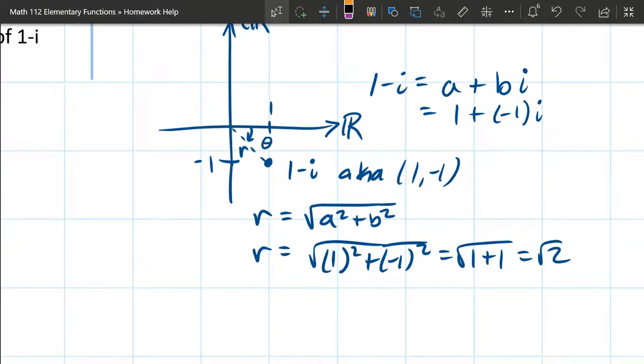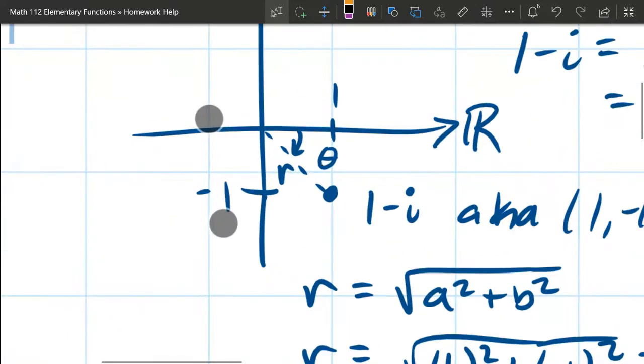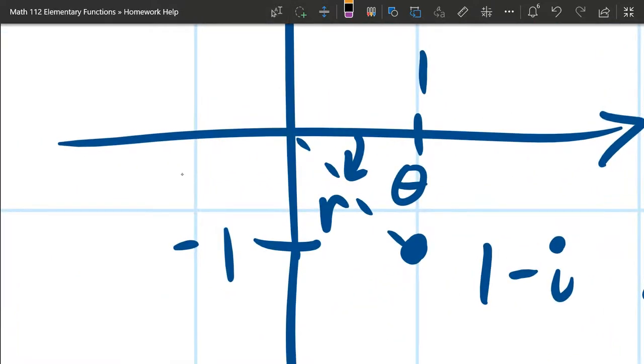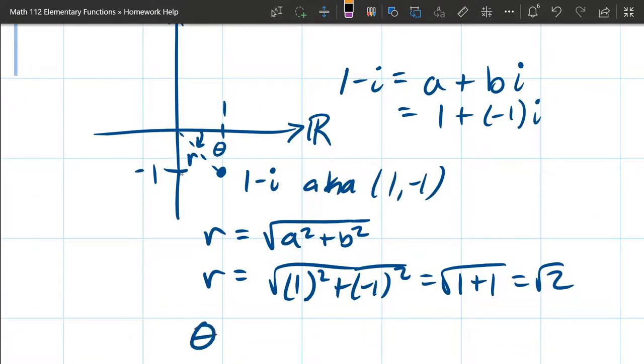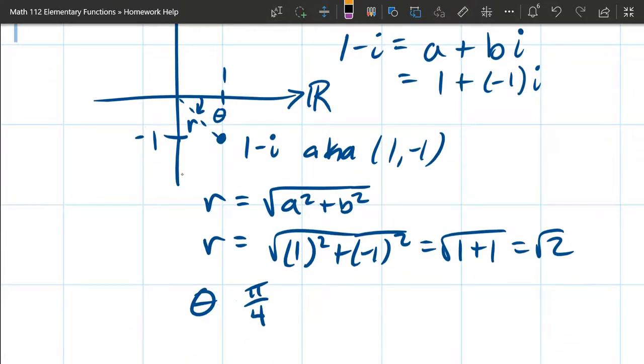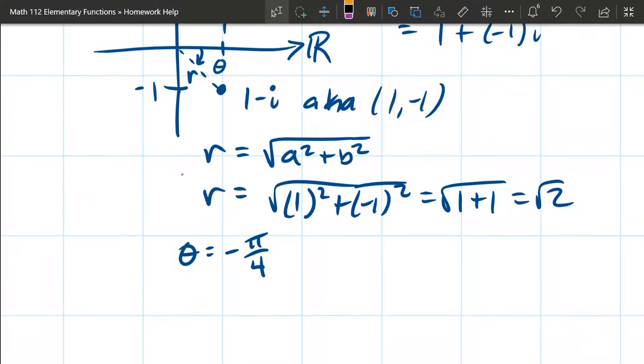So that's the radius part. Now we're going to look at the angle. I intentionally chose a very nice angle here. This angle, if I zoom way in, is halfway between 0 and negative pi over 2. So if you just think about this right here, we're halfway between 0 and negative pi over 2. So our angle is going to be negative pi over 4. There are going to be times where you can't just visually look and see what your angle is.